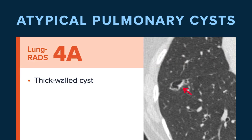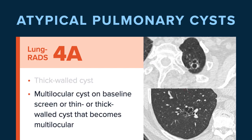IV-A lesions are thick-walled cysts. As we see in this example, we have a unilocular cyst that has a thick wall of more than two millimeters — this is a thick-walled cyst and it's a Lung RADS IV-A. Multilocular cysts are also IV-A lesions. We can identify two different examples here of different multilocular cysts — these are suspicious lesions classified as IV-A. They may be initially multilocular, or they may be a previously thin or thick-walled cyst that was stable and then develops loculations or internal septations, which will then be classified as Lung RADS IV-A.